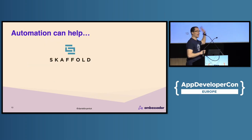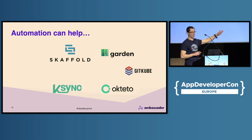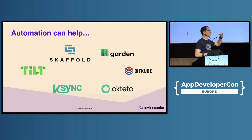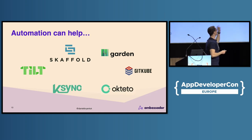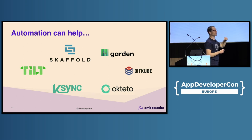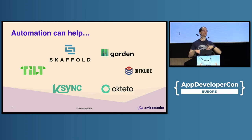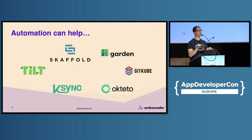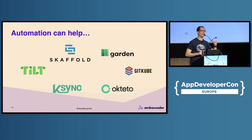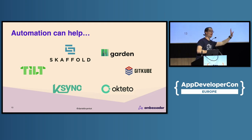Automation can help. Hat tip to Scaffold, Gardens, GitCube, Octeto, Ksync, Tilt, and many others. A lot of the time these can help you automate the build and deploy of the Docker container in the background to a remote target, so you're not constantly on the CLI doing Docker build and Docker push. These tools do much more than that, but they're good jumping-off points if you're looking for automation.